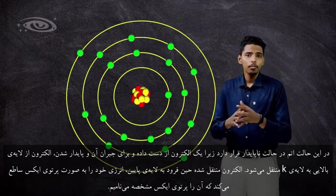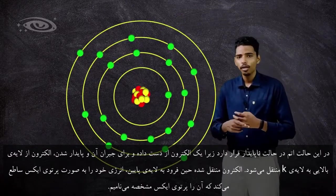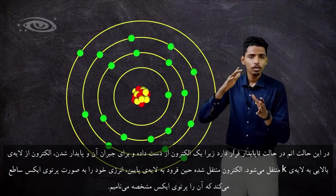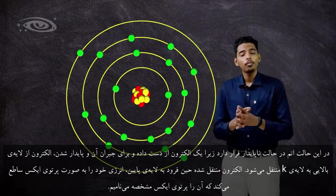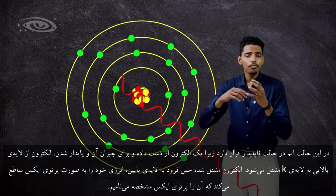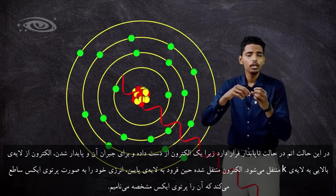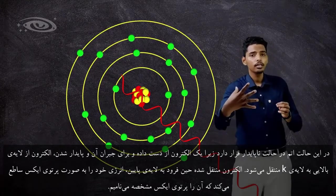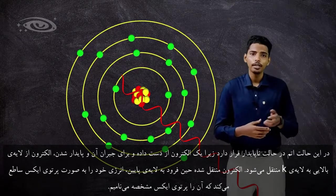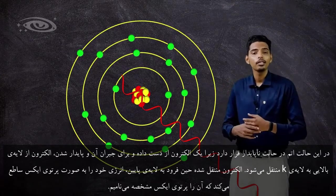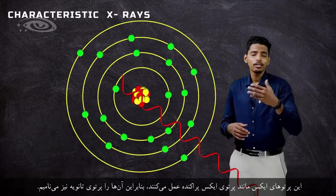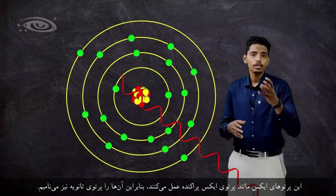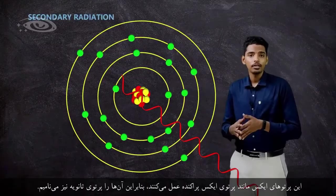The atom is now unstable because it has lost one electron. To compensate and become stable, an outermost electron drops into the innermost shell. During that process, the outermost electron accelerates and releases energy in the form of x-radiation — we call this characteristic x-rays. These characteristic x-rays act as scattered radiation, also called secondary radiation.